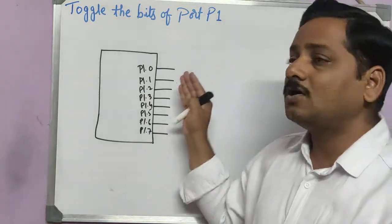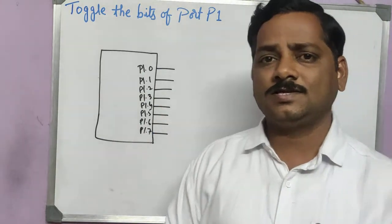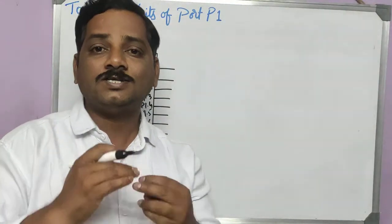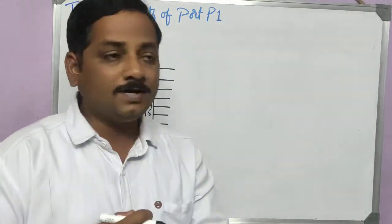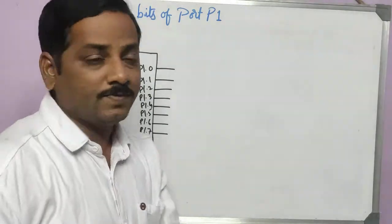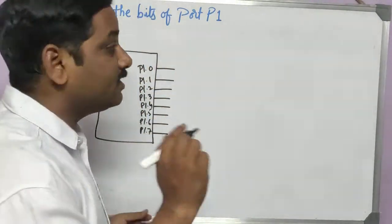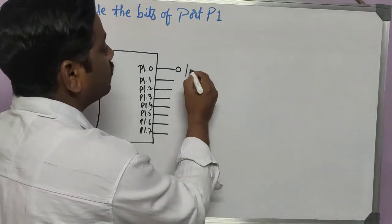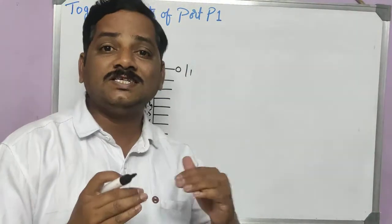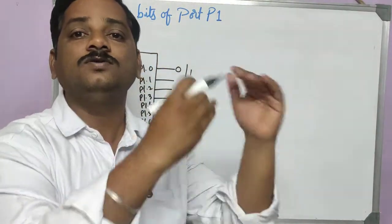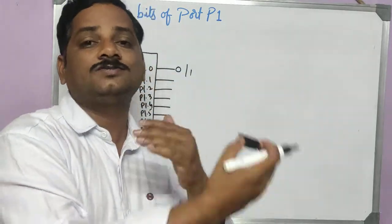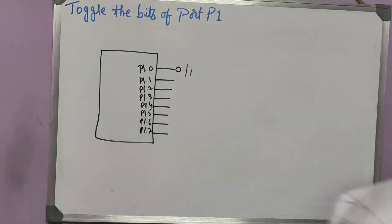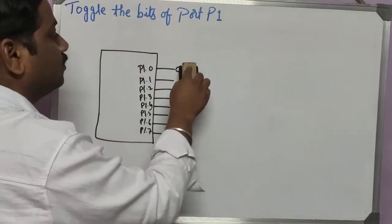We have to toggle all these bits. Let's understand what toggle means. Toggle is nothing but a change of bits in a particular port. For example, P1.0 — if it is 0, after a fraction of a second it has to become 1. So it is changing its level from 0 to 1 or 1 to 0. If it was 1, it has to change to 0. That is called toggling — just changing the bits from low to high or high to low.